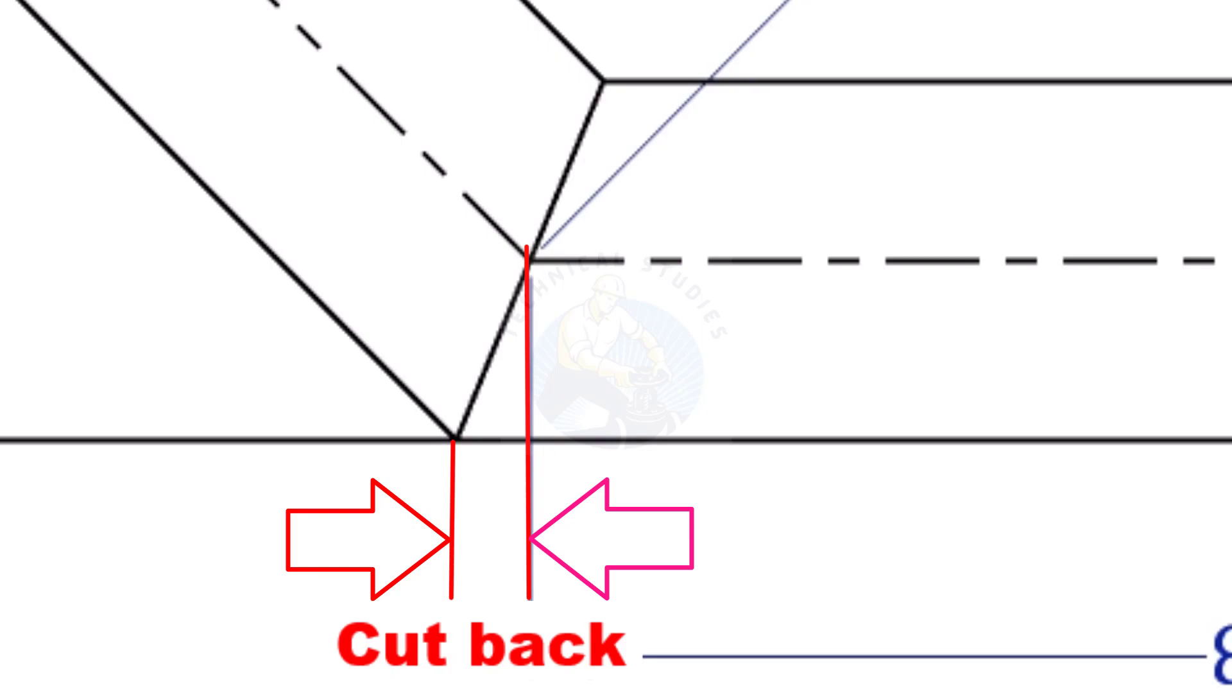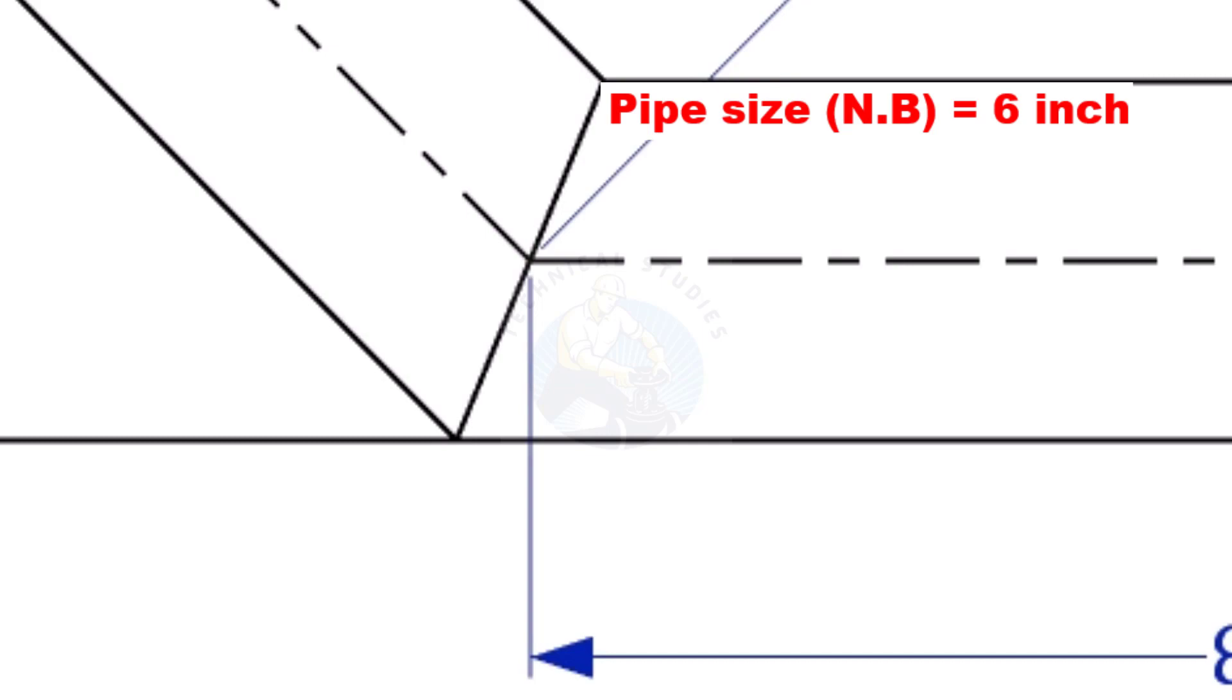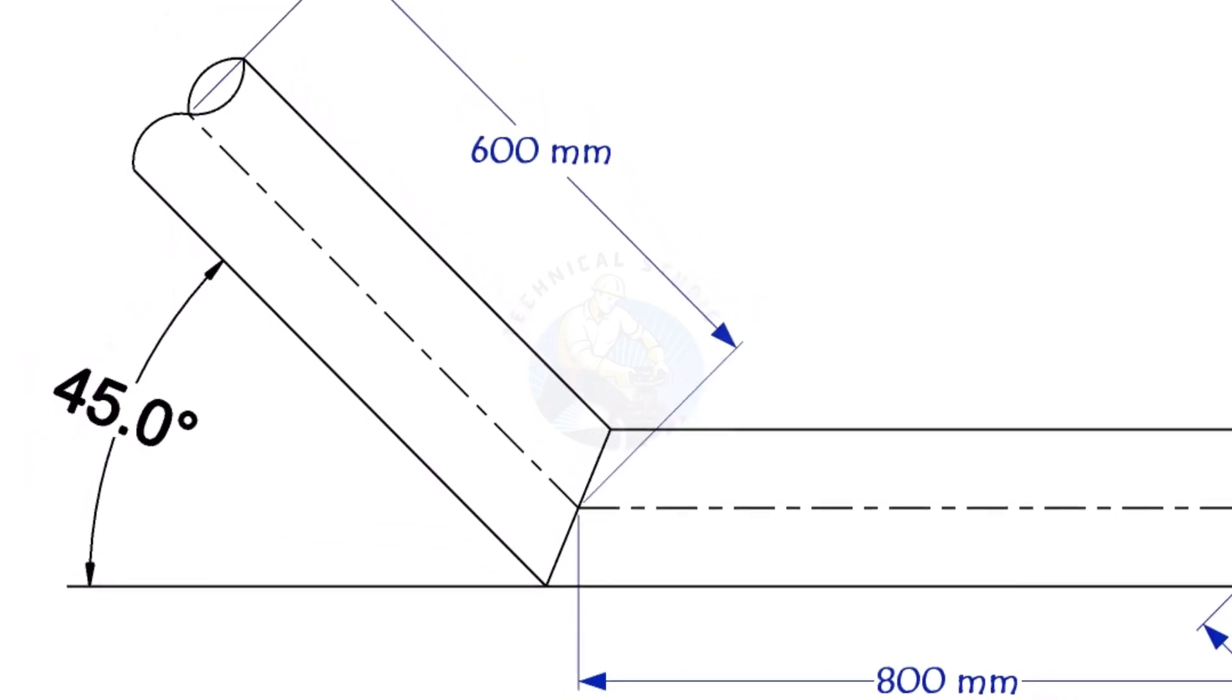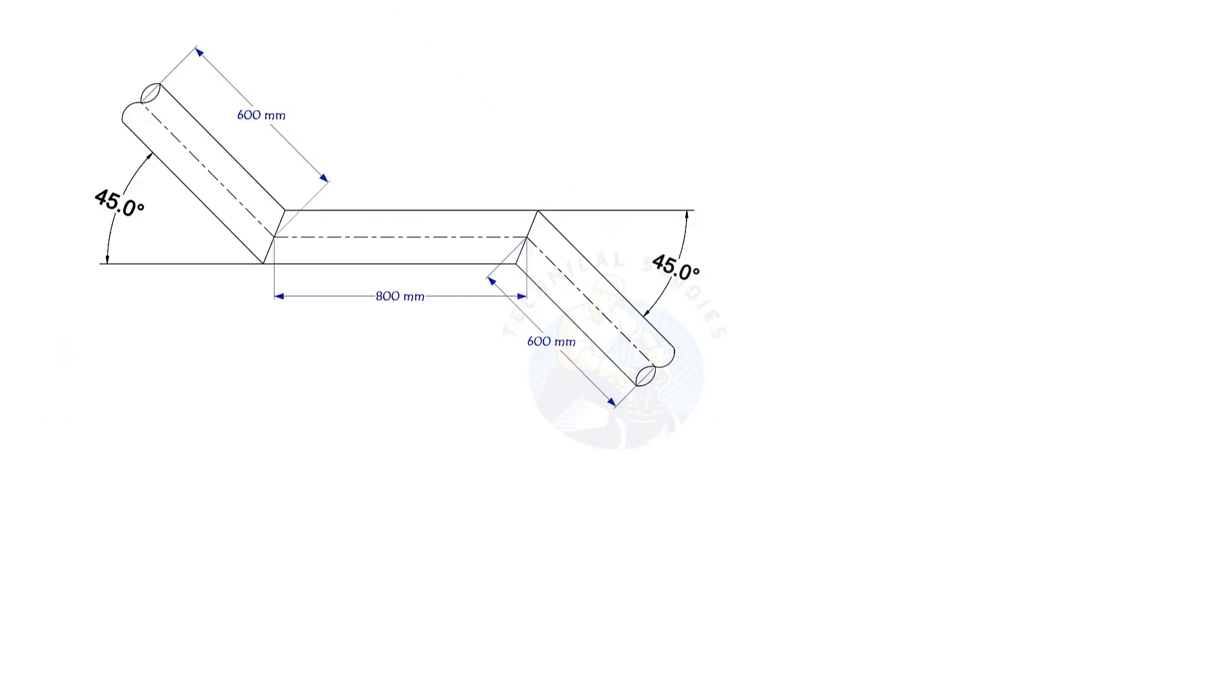To mark a miter cut, we need to know the cutback of the miter. In this offset, the nominal diameter of the pipe is 6 inch. The angle of the miter is 45 degree. This method is suitable for cutback of any degree. The outside diameter of a 6 inch pipe is 168.3 millimeters.